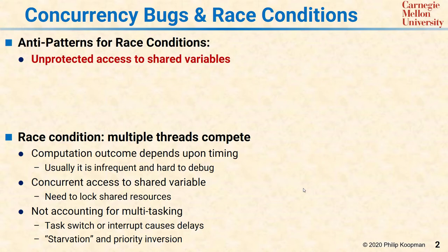The anti-patterns for race conditions are: first, unprotected access to shared variables, which is solved by using locks on shared variables. Another anti-pattern is that your shared variables are not declared volatile, so even though you said you were going to write the variable, the compiler optimized away the write or delayed the write.